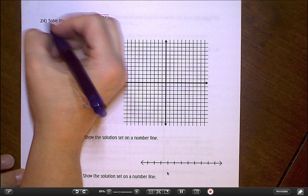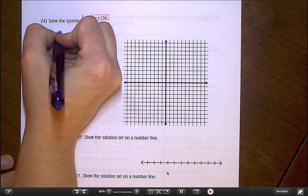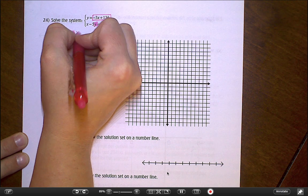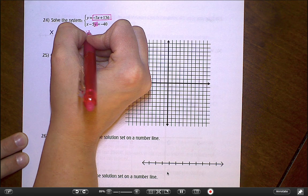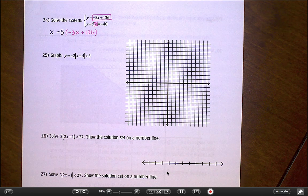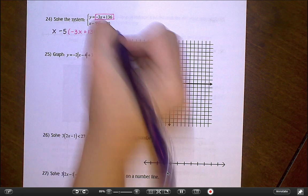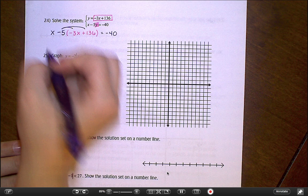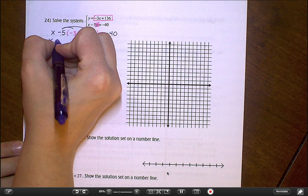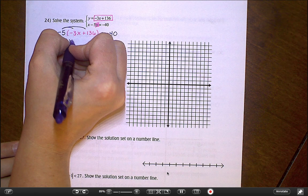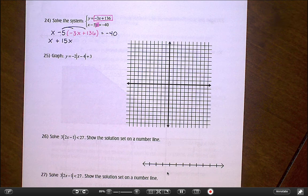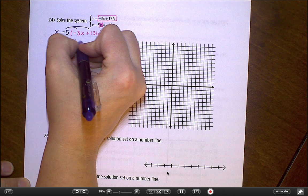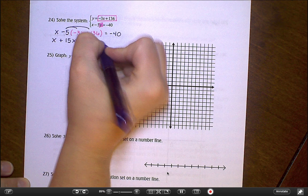When I rewrite that bottom equation now, it looks like this: x minus 5, but then in place of y, I'm doing negative 3x plus 136. And then continuing on with that bottom equation, that's going to equal negative 40. I'm solving from there. I'm going to distribute my negative 5, so I end up with x. Negative 5 times negative 3x would be 15x. Negative 5 times 136 looks like negative 680.